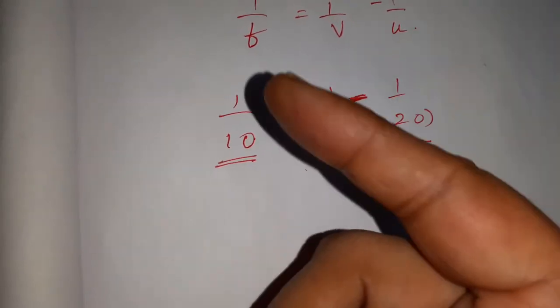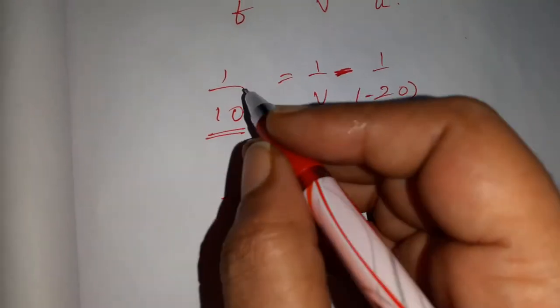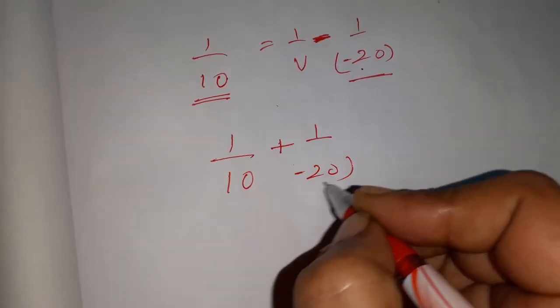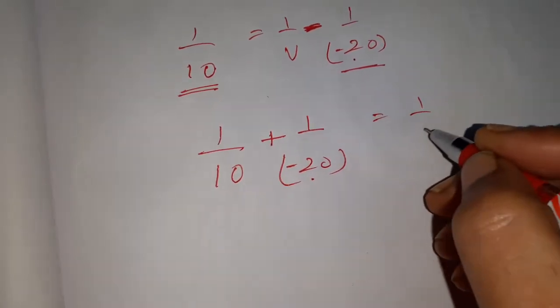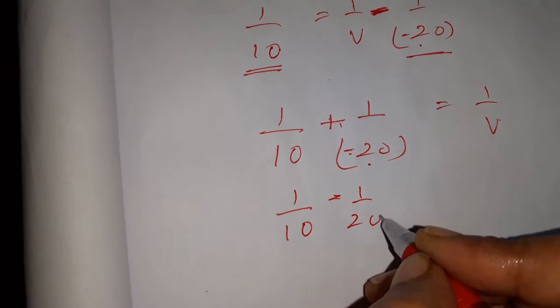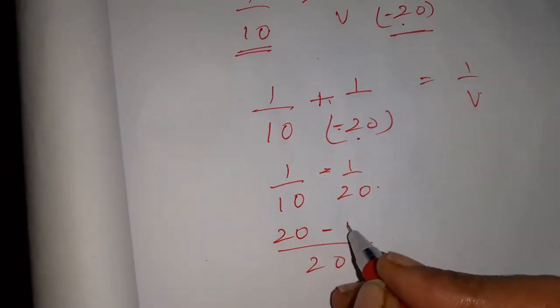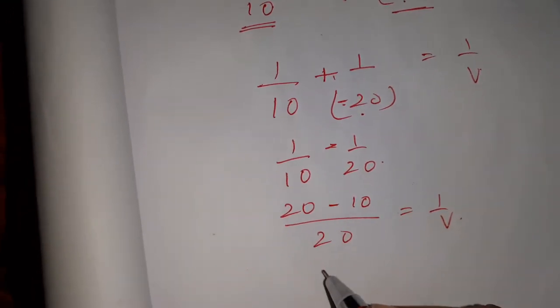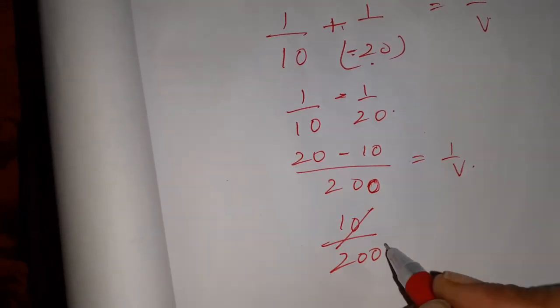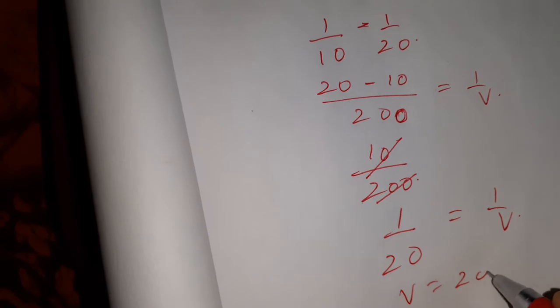So that I will tell when I'm explaining the nature of the image. 1/10, if you bring this plus 1/20 is equal to 1/V. Plus into minus you will get minus. So 1/10 - 1/20, taking LCM 200, 20 minus 10 will be 10. So 10/200, then 1/20. So V is equal to 20 cm.